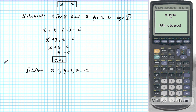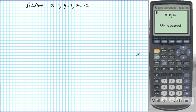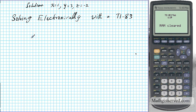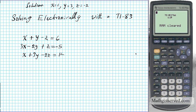Now I'm going to show you how to do this problem using a TI-83 graphing calculator in just one step — solving electronically. The system is: x plus y minus z equals 6; 3x minus 2y plus z equals negative 5; and x plus 3y minus 2z equals 14. To translate it into a language the calculator understands, I'm going to transform it into its related matrix form.